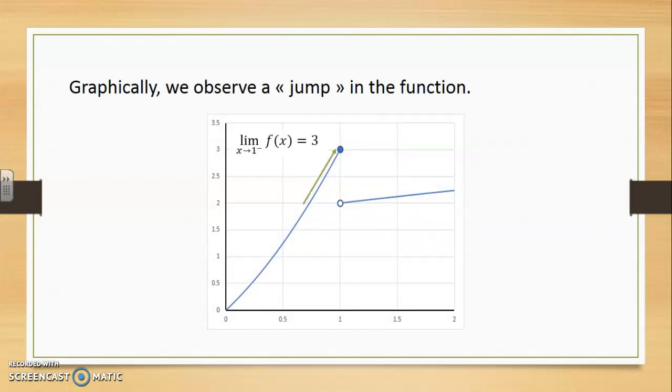As we approach 1 from the left, the function's y values are heading towards 3. As we approach 1 from the right, the function's y values are approaching 2. It is this disagreement that forces us to say that the limit as x approaches 1 for the function doesn't exist, even though both one-sided limits do exist.